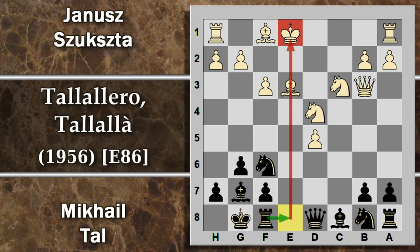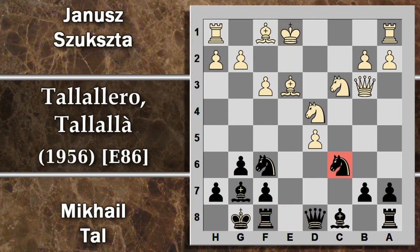Attenzione: c'è la possibilità di giocare torre E8, inchiodare l'alfiere e creare preoccupazioni al monarca avversario. Ma Tal vuole cominciare a dare spettacolo sin da subito: gioca cavallo C6, un sacrificio immediato. L'idea: se il cavallo viene preso si apre anche la colonna D, e ben presto i cannoni del nero mireranno verso le vicinanze del re avversario.